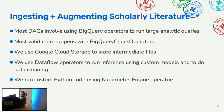Most of our DAGs involve using BigQuery operators to run large analytic queries. We use BigQuery check operators for data validation — for example, when vendors change the structure of their data on us. We use Cloud Storage to store intermediate files and Dataflow operators to run parallelizable tasks like inference or data cleaning. We also use Kubernetes Engine operators to run custom Python code.